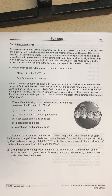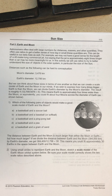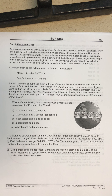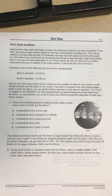The first part we're going to look at the Earth-Moon system to get a sense of scale for those two. Astronomers often deal with large numbers for distances, masses, and other quantities. They often use ratios to get a better sense of how big or small these quantities are. This can be useful in our daily lives as well. For example, we may not have a good sense for the length of a 40-meter long commercial jet, but saying that the jet is approximately 8 times longer than a car may be more meaningful. This activity will use ratios to better understand the size of objects in the solar system, in particular the size of the Sun.